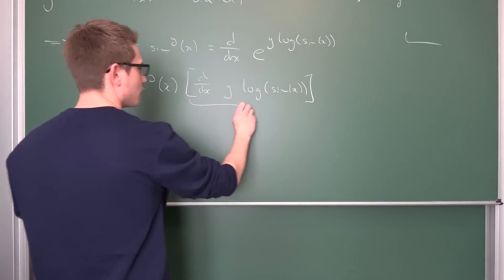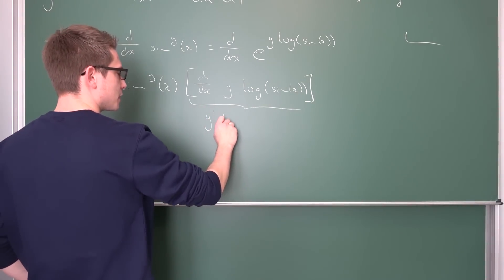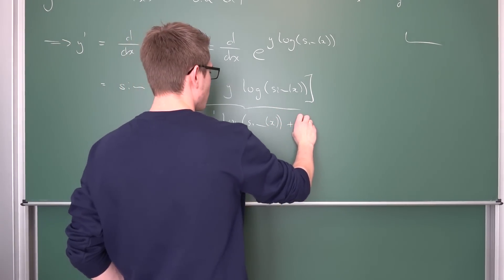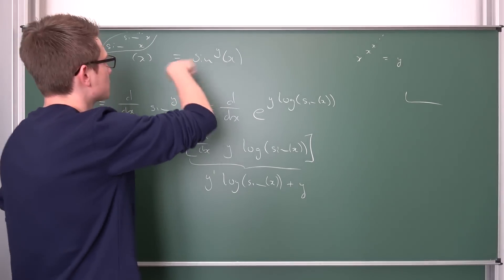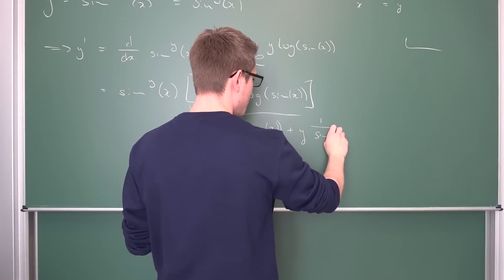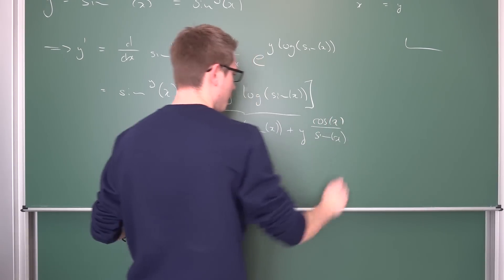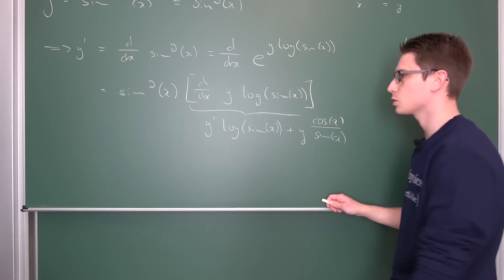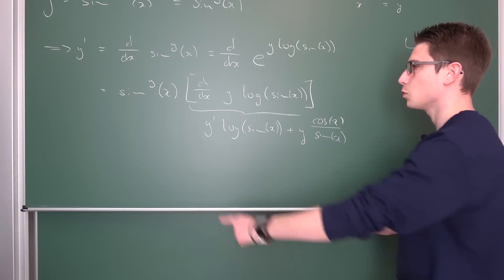I mean this is just kind of the chain rule and the product rule. So we have y prime times natural log, the logarithm of sine of x, plus, okay, y is going to be preserved. Don't forget y is nothing but sine to the y power, so infinite power tower. So we have one over sine of x as the differential, times the inner derivative which is cosine. So this right here is the cotangent.